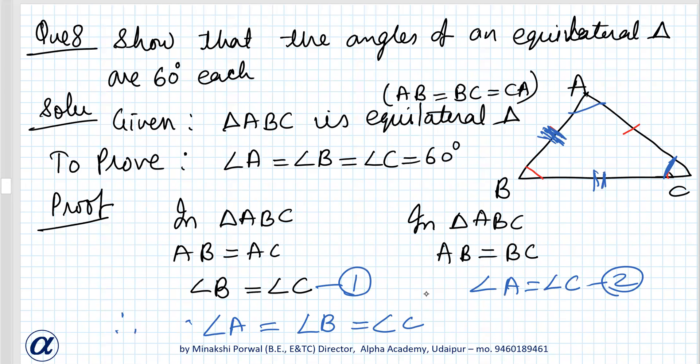If all three angles are equal, let each of them be X. That is equal to X. Now angle A plus angle B plus angle C equals 180 degrees. So X plus X plus X equals 180, so 3X equals 180, X equals 180 by 3, that is equal to 60 degrees.